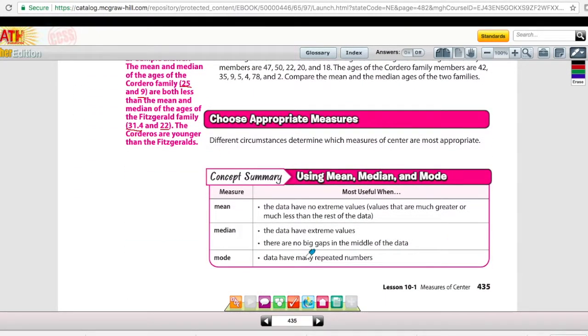At the bottom of page 435, you have a very informative concept summary chart on when to use each one of the measures of center. So mean is when the data has no extreme values. That means all the data points are very close to one another and there are not any values that are much greater or much less than the rest of the data. Use the median when the data have extreme values or there are no big gaps in the middle of the data. In mode, the data have many repeated numbers. So this is a very useful chart for you to keep in mind when trying to find the best measure of center.